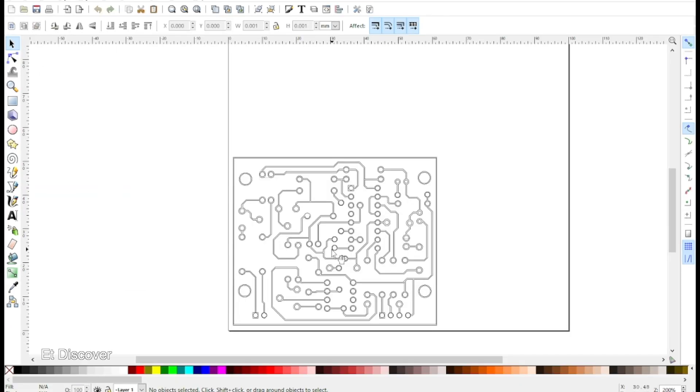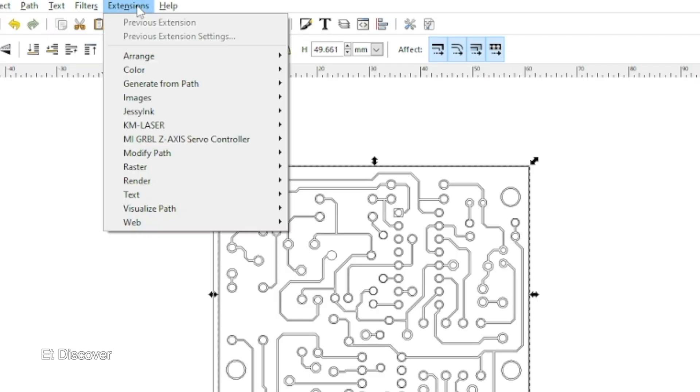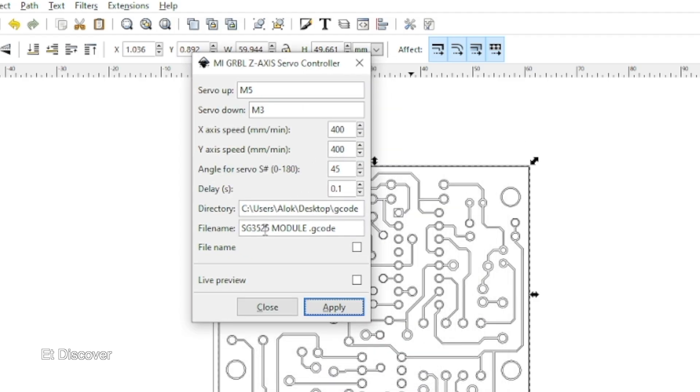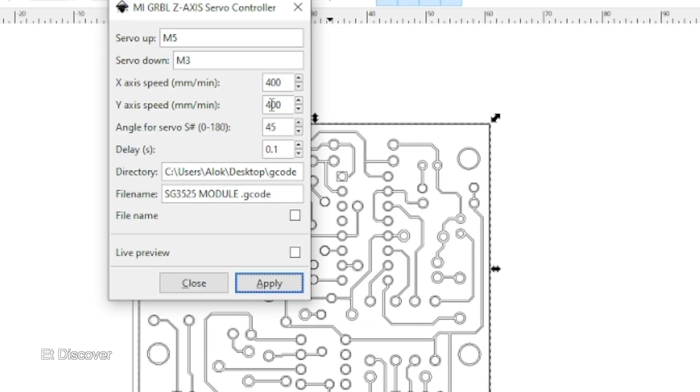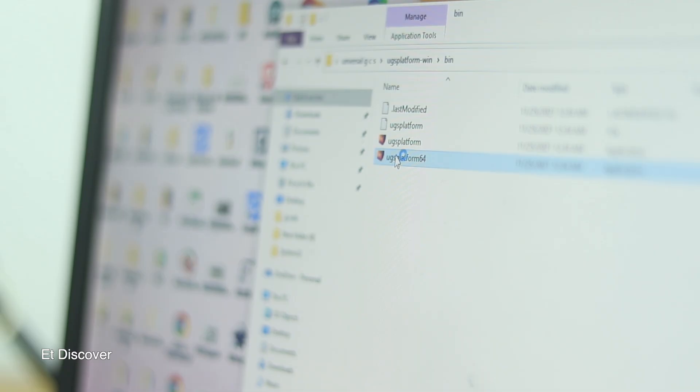Then you need to click the path option. After that I go to Extensions, and here I already added an extension called MI Z-axis servo control extension. I click this option and here you can see everything about your servo, including your XY feed rate and your servo movement degree. You can select according to your CNC machine. Next I save my G-code file in a folder.